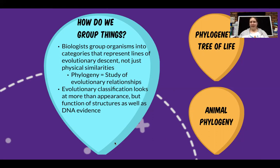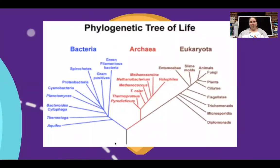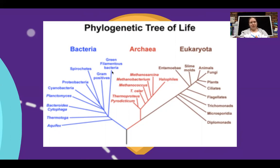We have a type of study that focuses on this called phylogeny — the study of evolutionary relationships. When a new species is found, phylogenists come in to study it and figure out where it would be located: what kind of organism it is, what kingdom, what phylum or class, etc. Evolutionary classification looks at more than just appearance — it looks at the function of structures, not just how they look but also what they do and how they develop. It also looks at DNA evidence — how much DNA organisms have in common. This is shown in the phylogenetic tree of life, which shows how organisms split from common ancestors.